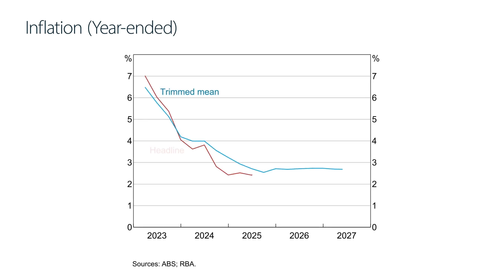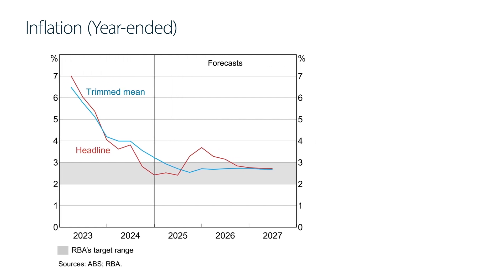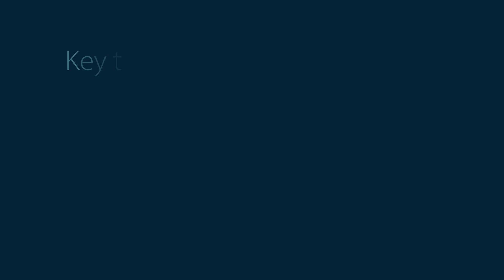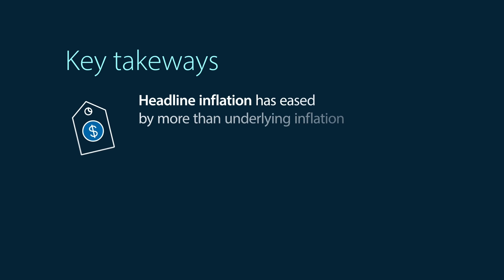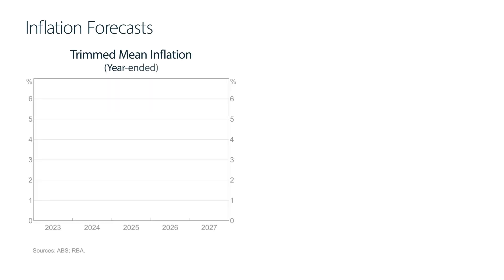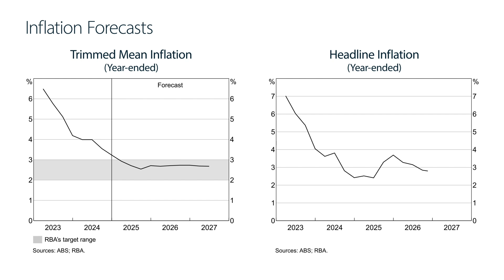Trimmed mean inflation, which is one measure of underlying inflation, has also eased, and more quickly than expected a few months ago. But trimmed mean inflation remains higher than headline inflation, mostly because of the impact of the government subsidies to households. So the key takeaways here are: headline inflation has eased by more than underlying inflation, and headline inflation is expected to go back up again as the subsidies unwind before it falls again. Underlying inflation is forecast to return to the 2–3% range by March quarter 2025, and headline inflation is expected to return to the target range in the second half of 2026.